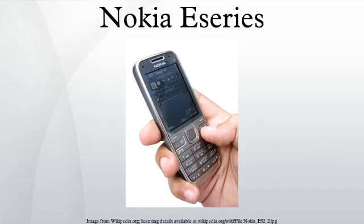On February 12, 2007, Nokia announced the addition of three new devices to the series: the E61i, E65, and E90. On April 11, 2008, Nokia Australia advised that the E61i would be discontinued in May 2008 and be replaced by a more featured but smaller E71.